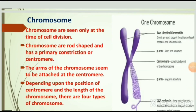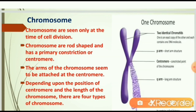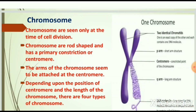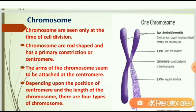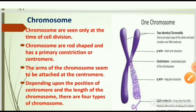Now we will see chromosomes. In the figure we can see two identical chromatids. The structure shows the p-arm (short arm), then the centromere, the q-arm, and the DNA molecule. Chromosomes are seen only at the time of cell division. They are rod-shaped and have a primary constriction or centromere. The arms of the chromosome are seen to be attached at the centromere. Depending upon the position of the centromere and the length of the chromosome, there are four types of chromosomes.